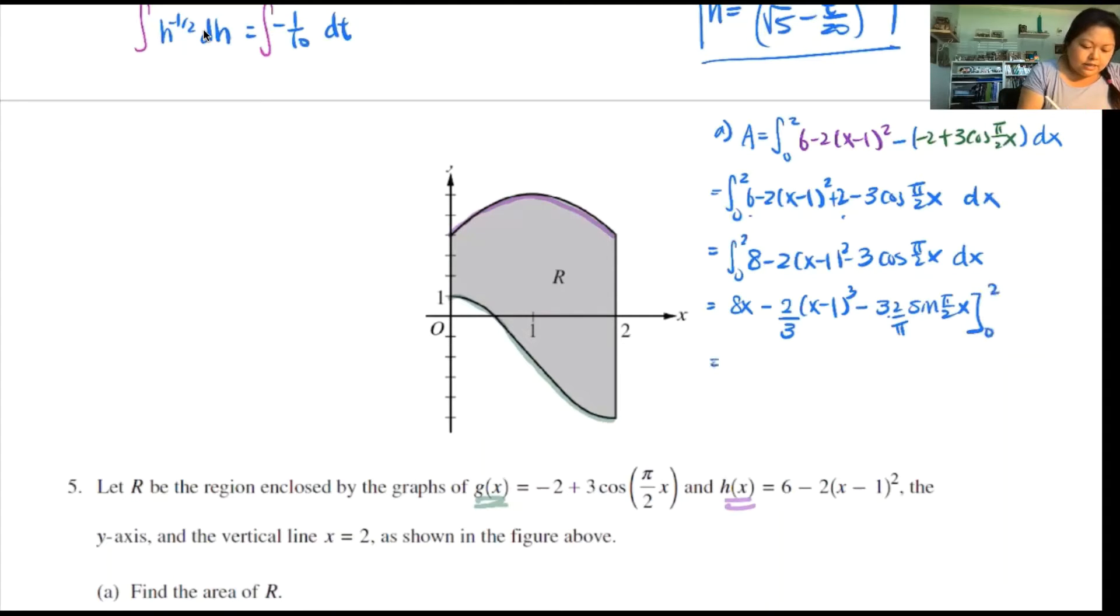Evaluate 0 to 2. So I get 8x minus 2 thirds x minus 1 cubed, minus 6 over pi, sine of pi over 2x, evaluate 0 to 2. So I get 8 times 2 is 16, minus 2 third, 2 minus 1 cubed is 1. Minus 6 over pi, sine of pi over 2 times 2 is pi, sine of pi is 0. Good, that's gone. Minus 8 times 0 is 0, minus 2 thirds negative 1, 0 minus 1 is negative 1, negative 1 cubed is negative 1, so I get negative 1 here. Minus 6 over pi, sine of 0 is still 0. Good, that's gone.